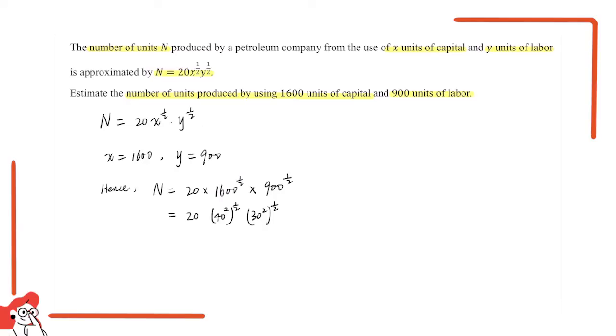Now, let me remind you an identity about exponents, which is a to the power of m, and then the whole term to the power of n, equals a to the power of m times n. Therefore, this expression can be written as 40 to the power of 2 times 1/2, and then times 30 to the power of 2 times 1/2.